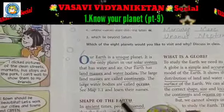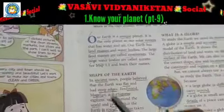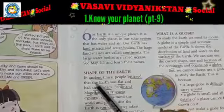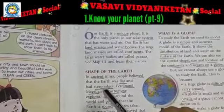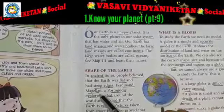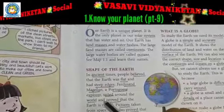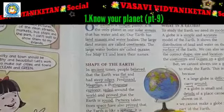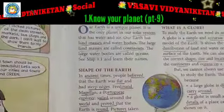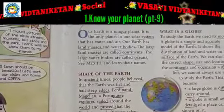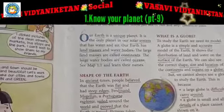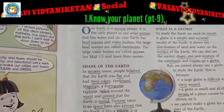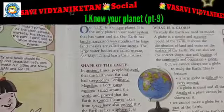Shape of the earth: In ancient times, people believed that the earth was flat and had steep edges. Ferdinand Magellan, a Portuguese explorer, sailed around the world and proved that the earth is round. Pictures taken from space have also proved that the earth is like a sphere — round, but slightly flat at the top and at the bottom.